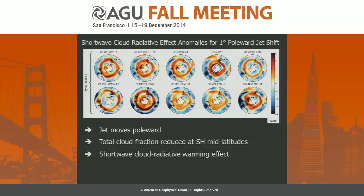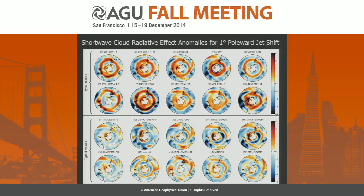I'll be showing you plots like this — shortwave cloud radiative effect anomalies for a one-degree polar jet shift across 10 CMIP5 models. By construction, the jet moves poleward by one degree in each panel due to internal variability. What you can see is that with the jet shift, we get this big red annulus region — a shortwave cloud radiative warming effect — in these 10 models. This is consistent with what the IPCC argues for future climate: when the jet moves further poleward, we reduce total cloud fraction at Southern Hemisphere mid-latitudes, producing this warming effect. But if you look at more CMIP5 models, not all of them behave like this. In other models, you see a messy pattern with very banded structures, and if you integrate over Southern Hemisphere mid-latitudes, it actually contributes to a net cooling effect.